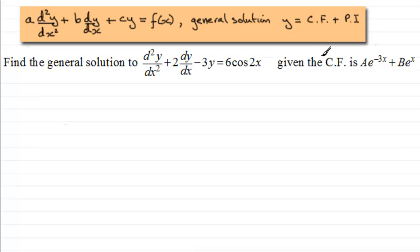And we're given that the complementary function for this equation is Ae to the power minus 3x plus Be to the power x. And if you're unsure how we get this complementary function then just click on this link up here and it will go back to a tutorial that showed you how I got this.